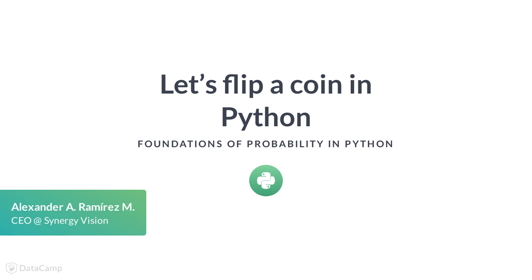This course is intended for people with basic knowledge about Python and familiarity with statistics. At the end of the course, you'll have an understanding of basic probability concepts like random variables, calculations, probability distributions, and important results like the law of large numbers.